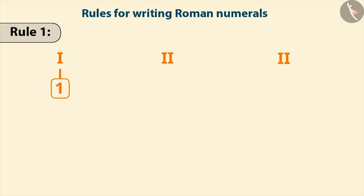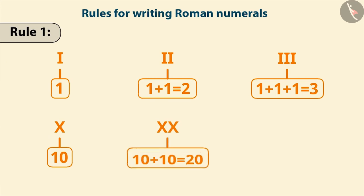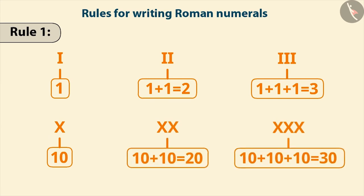The number of times a symbol is repeated, its value is added as many times. Similarly, repeating the tenth digit gives 20 and 30 respectively.